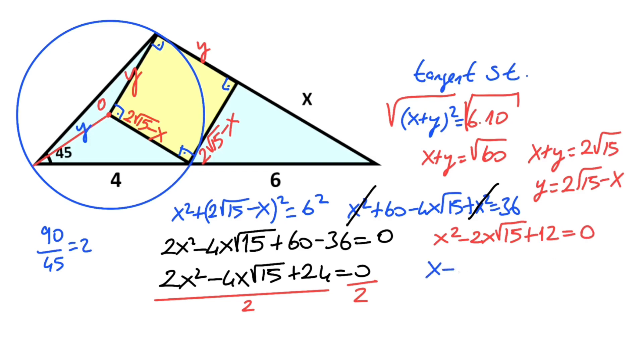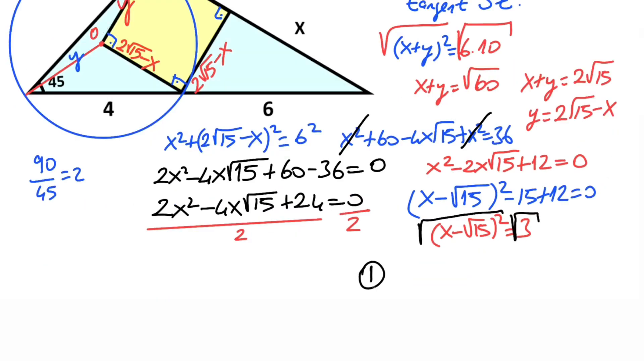And then if we convert this expression to a perfect square: (x minus root 15) squared minus 15 plus 12 equals 0. So (x minus root 15) squared equals 3. Square root both sides of the equation - that means we have two scenarios.